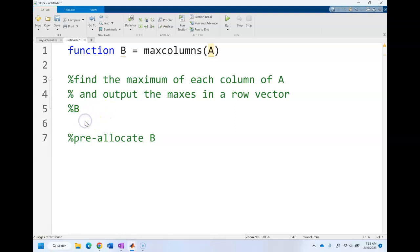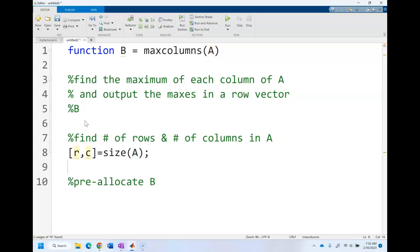First let's pre-allocate B, but before we do that we need to find the number of rows and number of columns in A. To do that we can use r comma c equals size of A. This is going to store the number of rows in r and the number of columns in c.